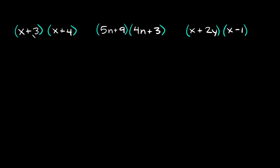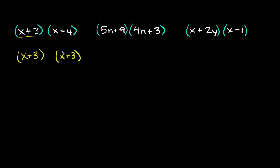So we have (x + 3) in parentheses times (x + 4) in parentheses. What you're going to do — it doesn't matter which one you pick. Let me show you how you can mix them up. For example, let's take x + 3 and just write x + 3 twice in parentheses: (x + 3) and (x + 3).